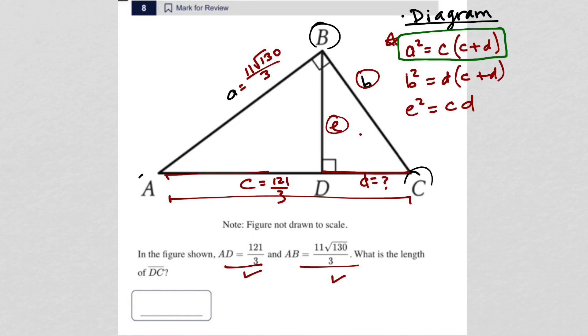So that would be A squared. So for us, A squared is 11 times root 130 over 3 squared is equal to C, right? The portion under A, the portion of the base under A, which is 121 over 3 times C plus D. Well, C plus D would just simply be 121 over 3 plus D, and that's what we're trying to find, right? We're trying to find the value for D.